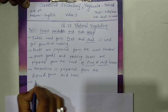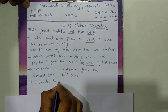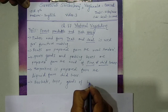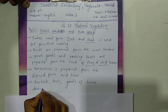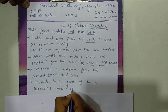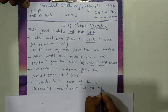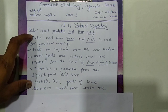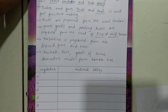Next, baskets, toys, and goods of home decoration are made from the bamboo tree. These are the forest products and their utility. Now we will look at a table which lists vegetation and their medicinal utility - meaning which vegetation is used for which medicine.